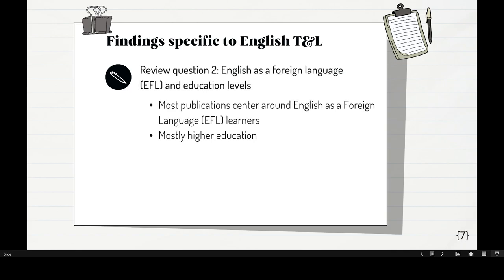For review question two — language and education level — because we're looking at Google Scholar and similar sources, most papers are English-oriented. Because we're talking about language education, a lot more English papers are published than other languages. There are some Japanese ones and some Turkish ones as well, but most are English-focused, specifically EFL. And a lot of them came from higher education, because that's where we have most contact with students.